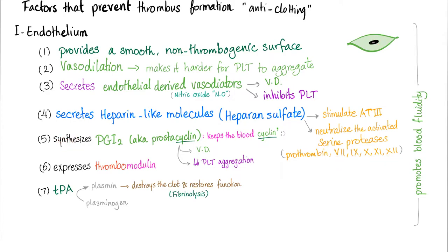The endothelium synthesizes prostaglandin I2, also known as prostacyclin, which keeps the blood cycling by vasodilation and inhibiting platelet aggregation. The endothelium also expresses thrombomodulin, which modulates thrombin from being pro-coagulation into being anti-coagulation. This is just amazing.